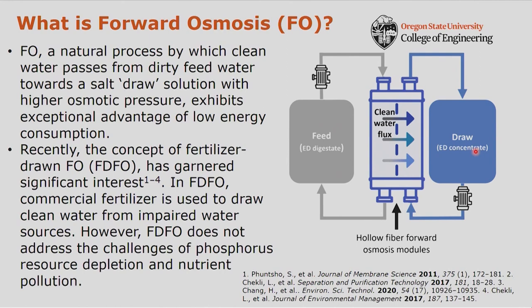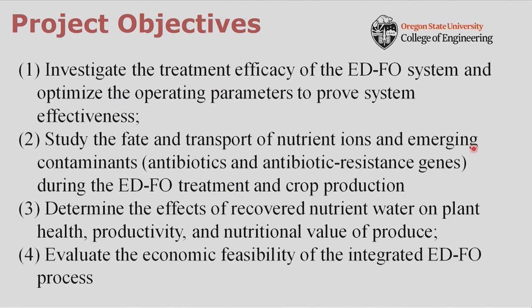Water quality analysis showed ammonia over 1,000 ppm, potassium over 600 ppm, nitrate at 140 ppm, and phosphate at 356 ppm in the original liquid digestate. During ED treatment, conductivity in the concentrate stream continuously increases as ions move from the dilute to the concentrate stream. After 250 minutes, a large conductivity difference develops between the two streams, creating a large osmotic pressure difference that makes them ideal draw solution and feed solution for the subsequent FO treatment.